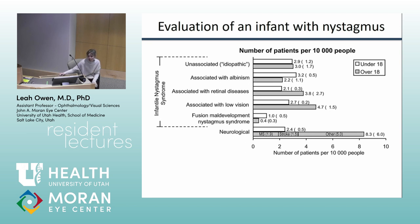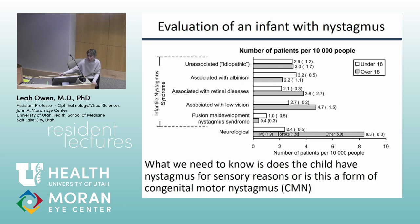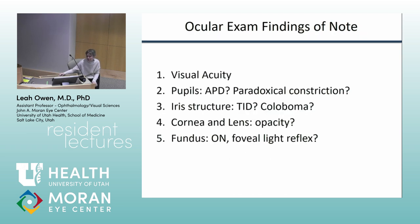Albinism is a common reason we see nystagmus in three- to four-month-olds. Less commonly we'll see it early with retinal diseases, though sometimes it appears later. You can see it early with conditions like Leber's, though we don't see that frequently. There's also fusion maldevelopment syndrome, which used to be called latent nystagmus — we'll cover that shortly.